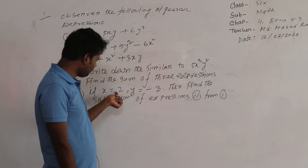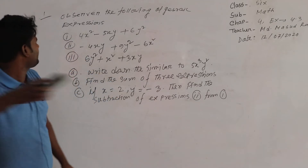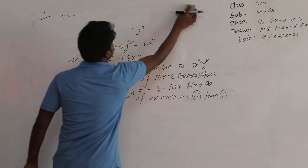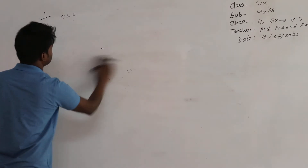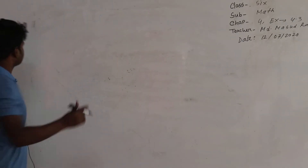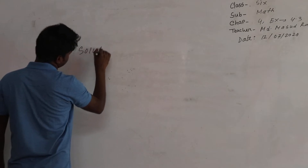Question A: write down the similar terms of 5X³Y². Question B: find the summation of the three expressions. Question C: if X equal to Y equal to minus 3, then find the subtraction of expression 2 from expression 1.